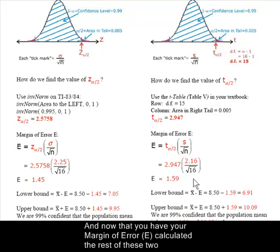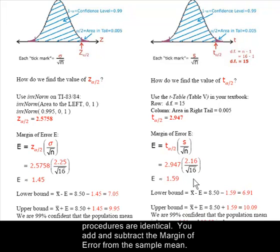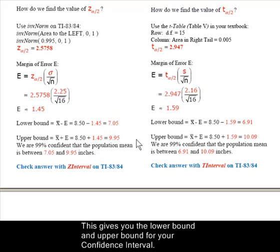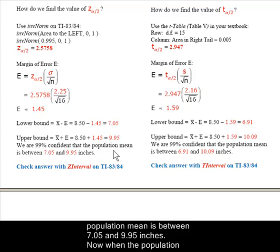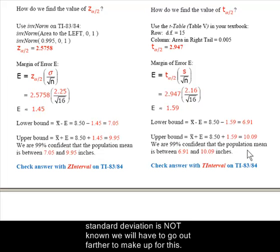And now that you have your margin of error E calculated, the rest of these two procedures are identical. You add and subtract the margin of error from the sample mean. This gives you the lower bound and upper bound for your confidence interval. When the population standard deviation was known, we are 99% confident that the population mean is between 7.05 and 9.95 inches.